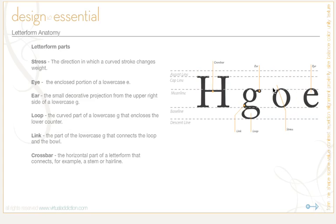The stress is the direction in which a curved stroke changes weight, and you can clearly see that happening in this O — the weight of the stroke is very thick and then it gets thinner, and that is referred to as the stress line. The eye is the enclosed portion of a lowercase e. The ear is the small decorative projection that comes off from the upper right-hand side of a lowercase g in some fonts. The loop is the curved part of a lowercase g that encloses the lower counter, and the link is the part of the lowercase g that connects the loop and the bowl.